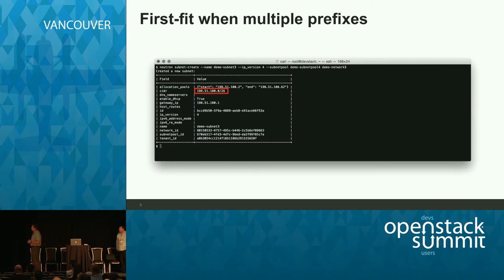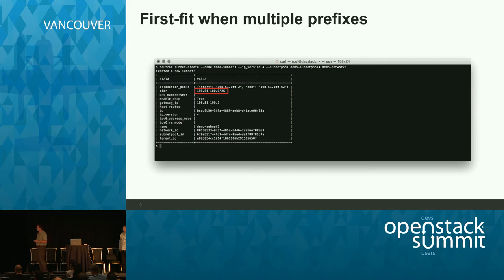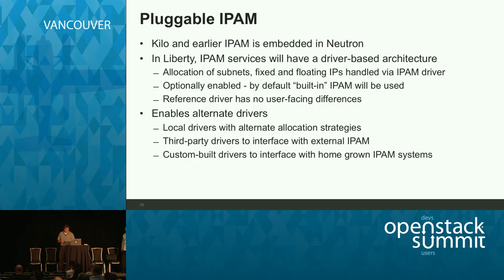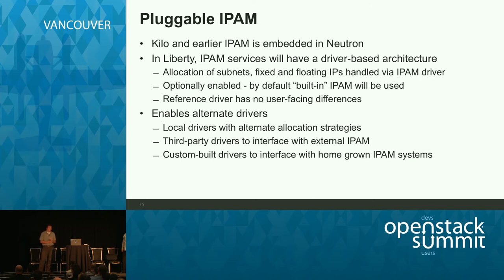The allocation strategy in the reference implementation tries to compact the space and use it as efficiently as possible. When you request a particular prefix size, it looks at the entire pool and tries to find you the numerically first subnet that fits the size you're requesting. This helps keep things from getting more fragmented than necessary. It's a pretty cool feature and a first step in getting the address space under control so we can do more with it.